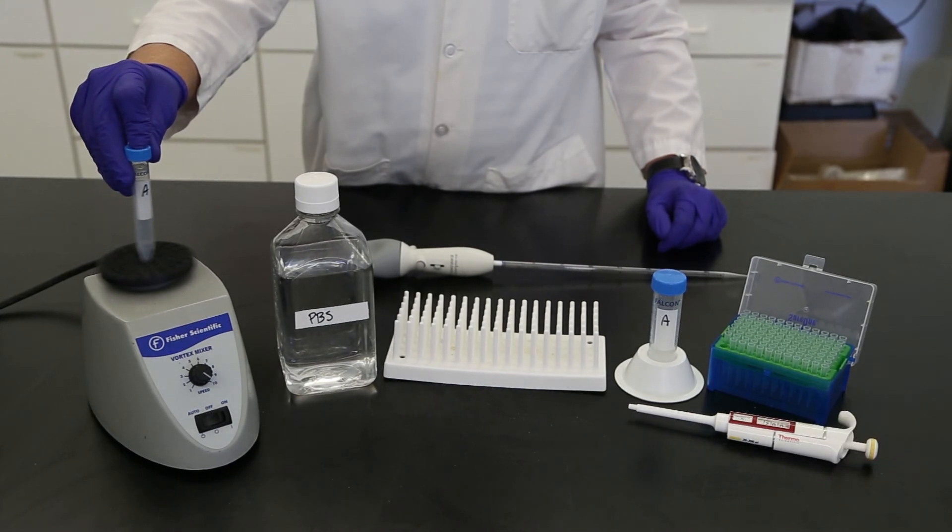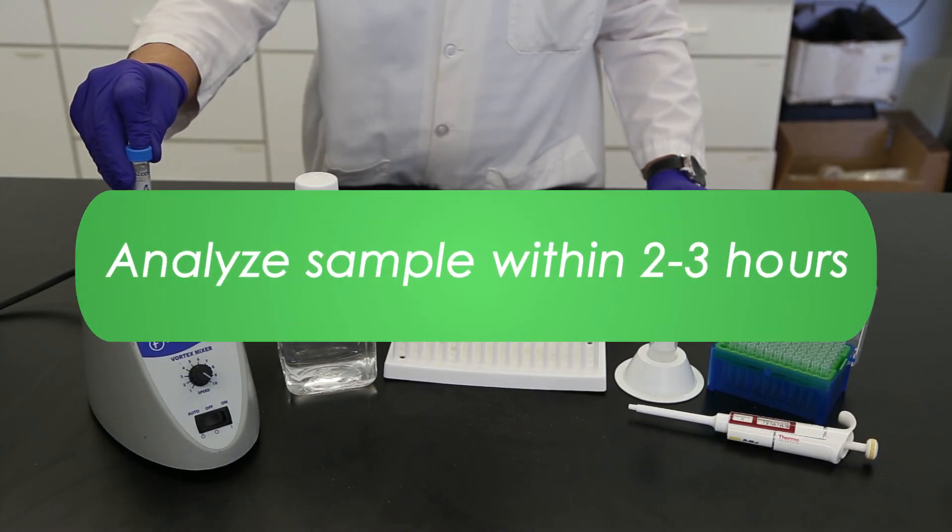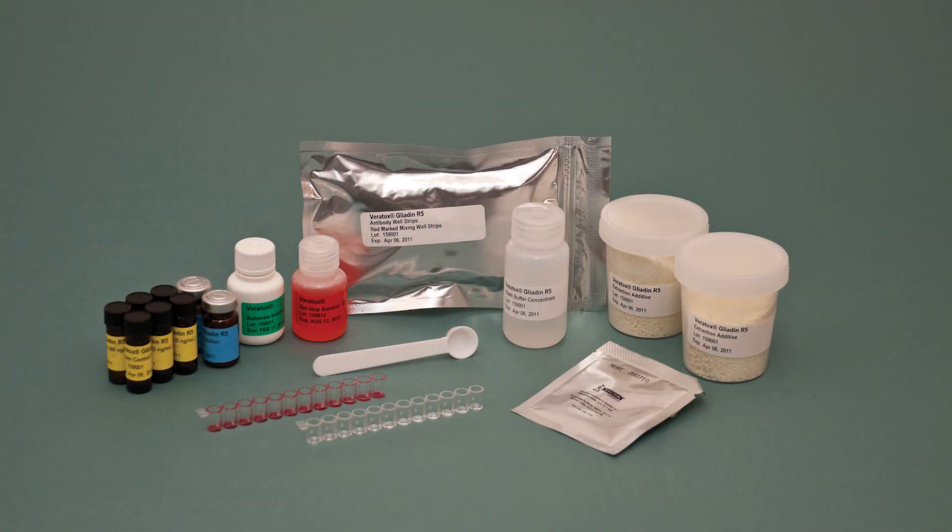Your diluted samples are now ready for the assay. Samples should be analyzed within 2 to 3 hours using the Veritox for Gliadin R5 test kit.